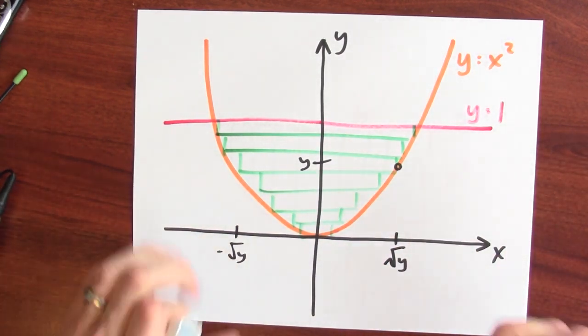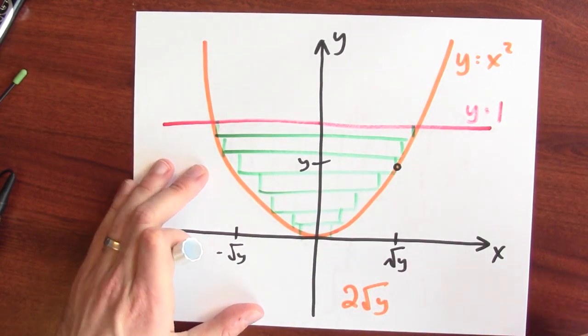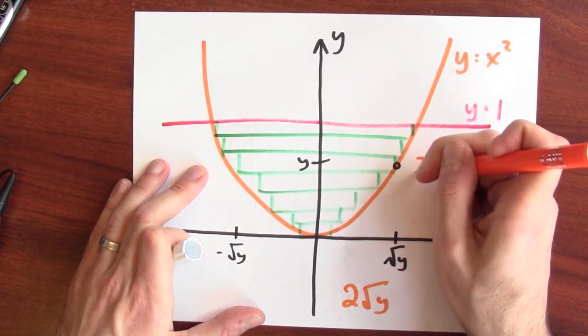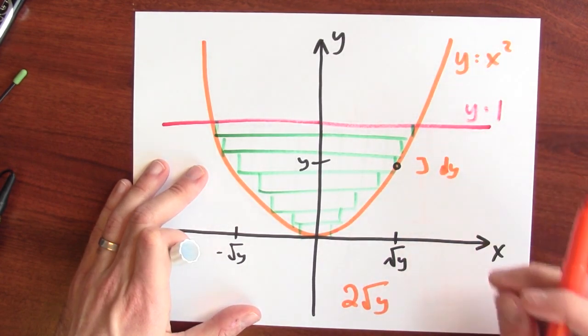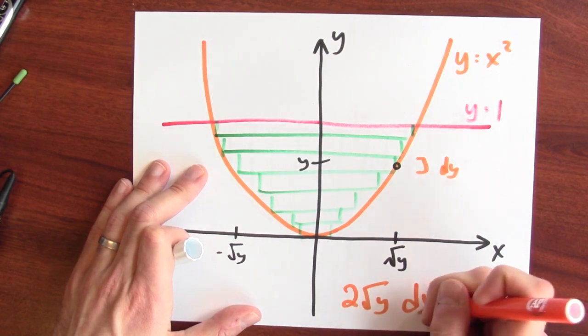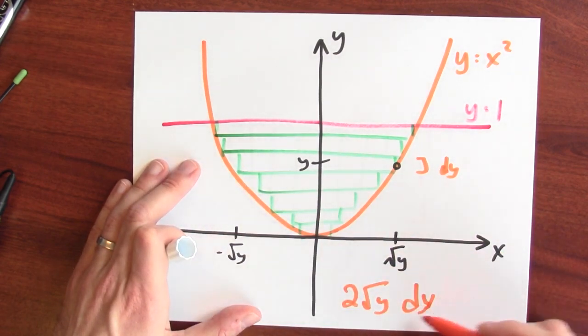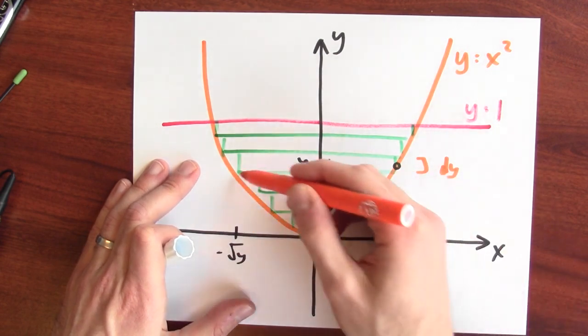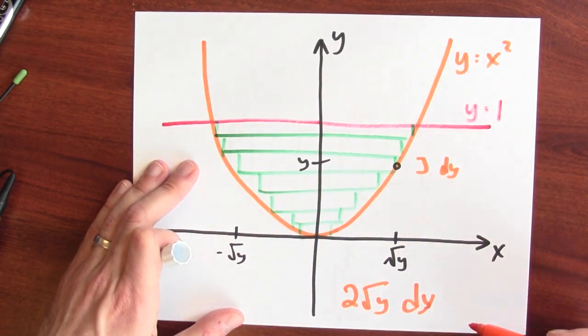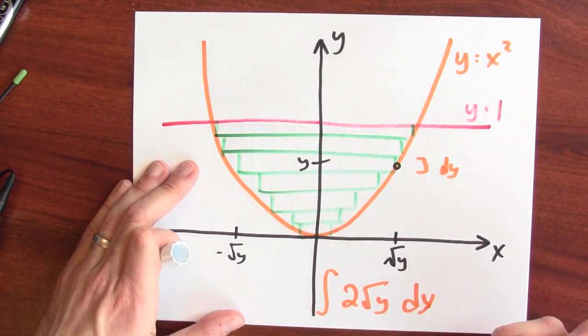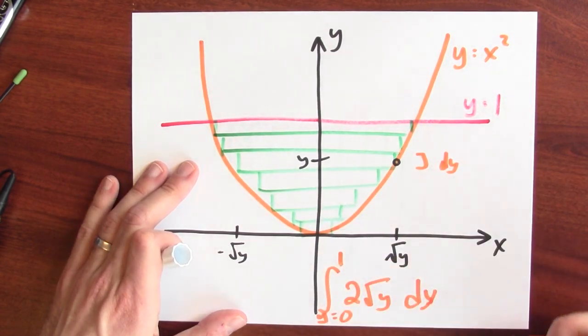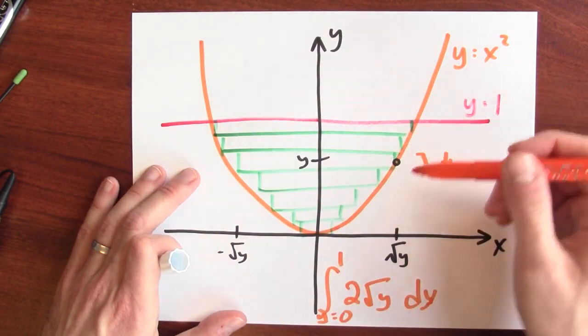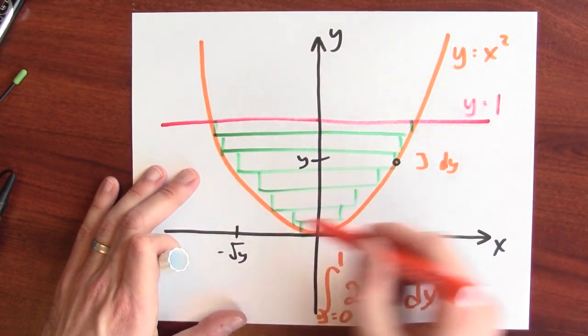Let me write that down. So I've got the width of the rectangle is 2 square roots of y. Now, how tall is that rectangle? Well, let's call that dy. I'm imagining that the rectangle isn't very tall, really thin. So the product, 2 square root of y, its width, and its not very tall height, dy, that gives me the area of one of these thin rectangles. And I'm going to integrate that. But from where to where? Well, y could be as small as 0 and as big as 1. So this integral will calculate the area of this region decomposed into horizontal strips.